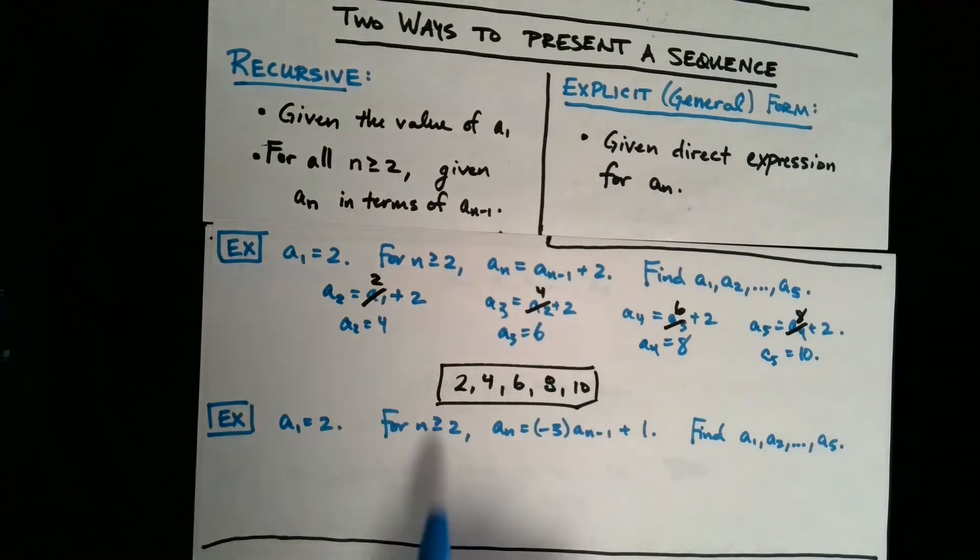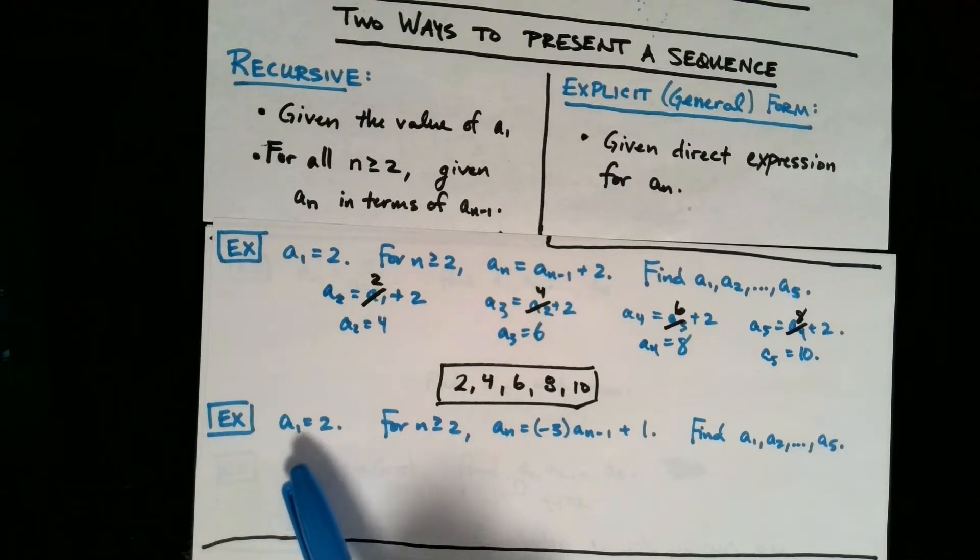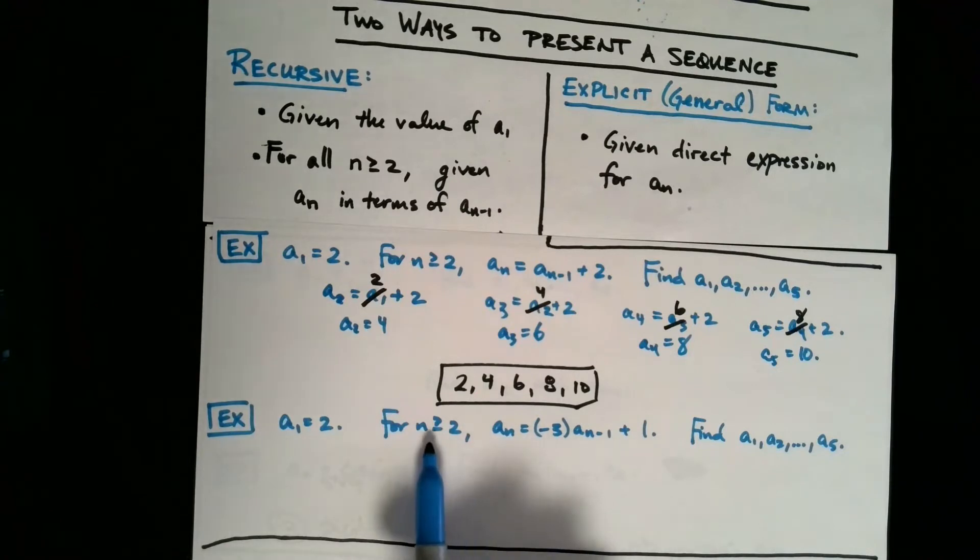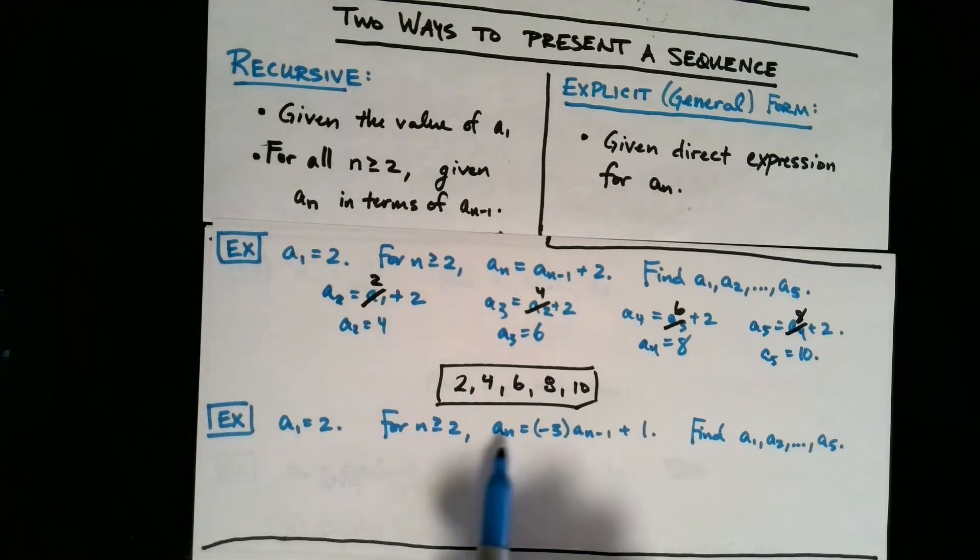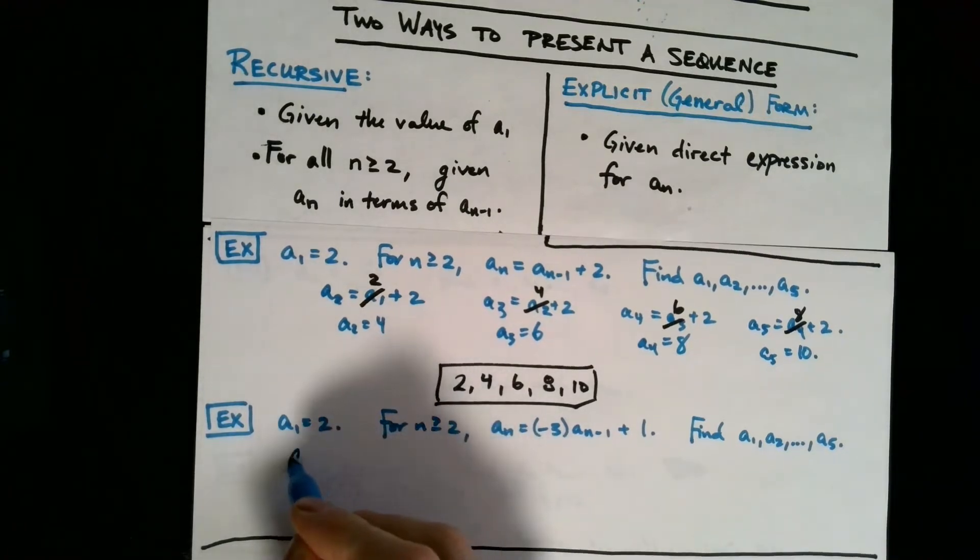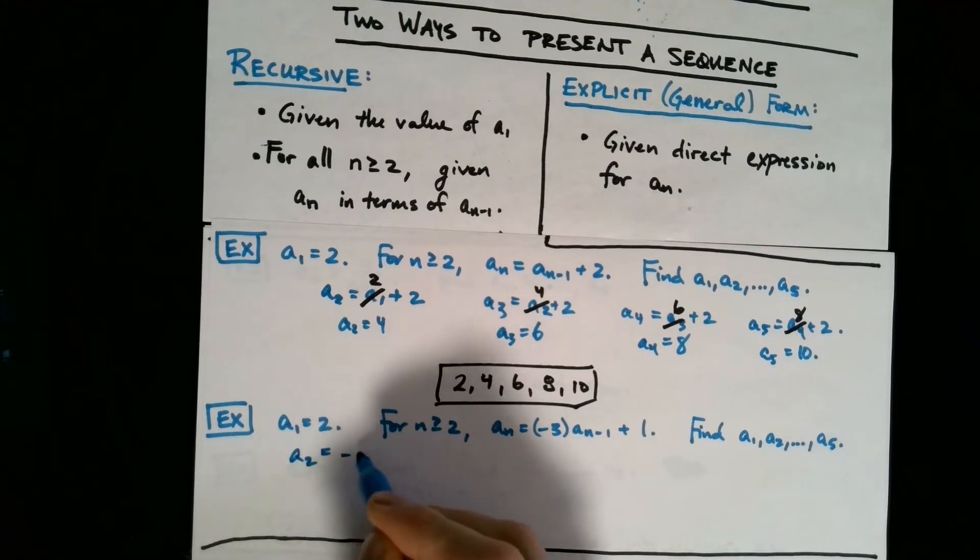So here is the list of terms which was requested of us, namely the terms from a₁ through a₅. So to extend this to maybe a slightly more complicated example, but really it's the same idea, let's look at this one here, where a₁ is 2, and the next number is minus 3 times the previous plus 1.